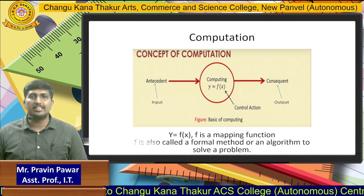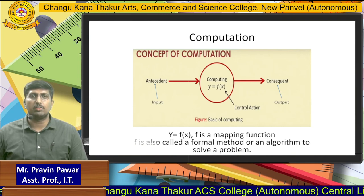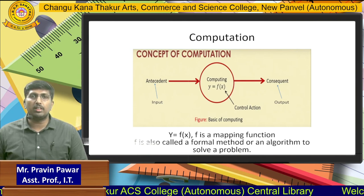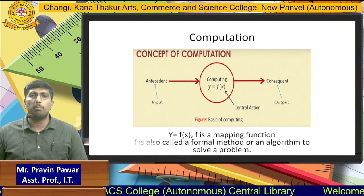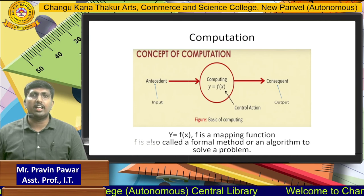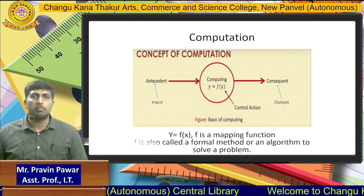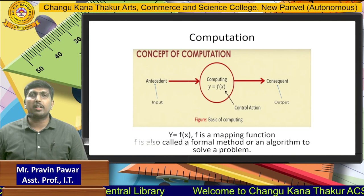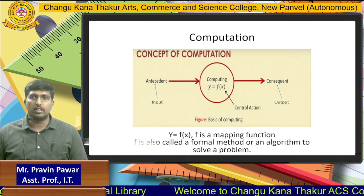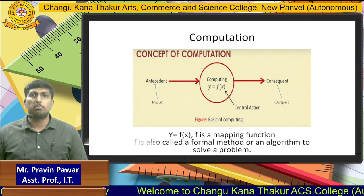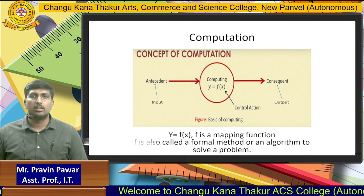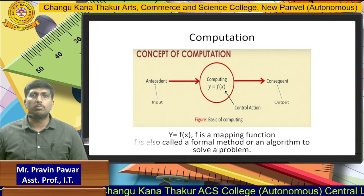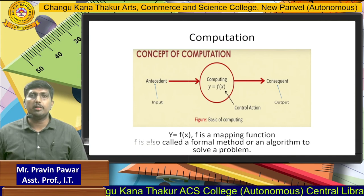Now on the screen we can see y = f(x). Here f is nothing but the mapping function that we are applying on the inputs going into that particular computer, and then finally we are generating some kind of output. This mapping function is also called a formal method or an algorithm to solve problems.